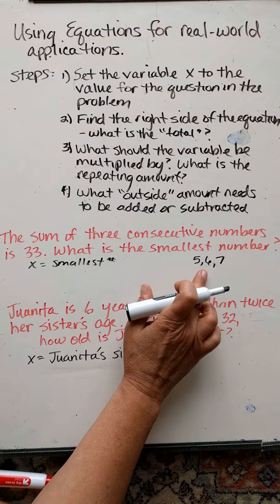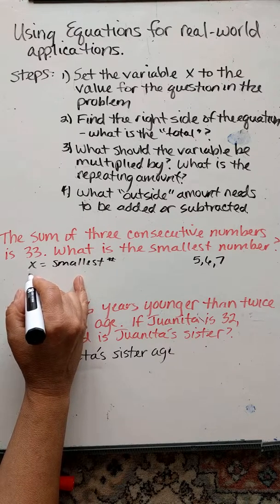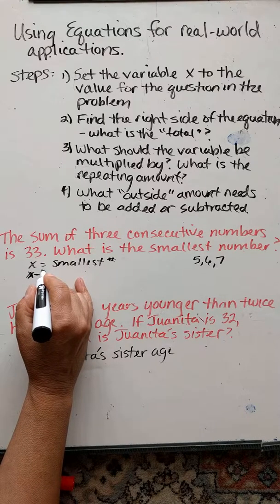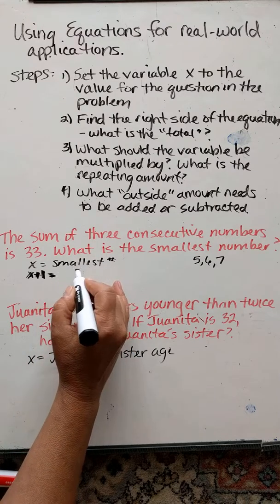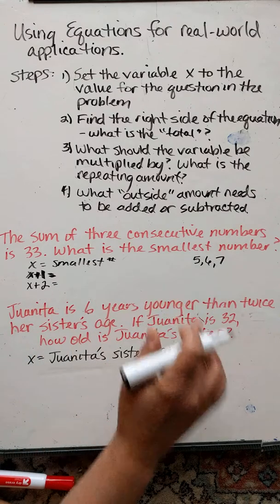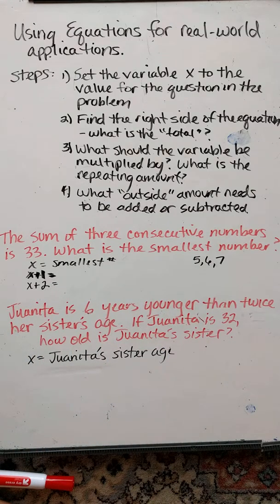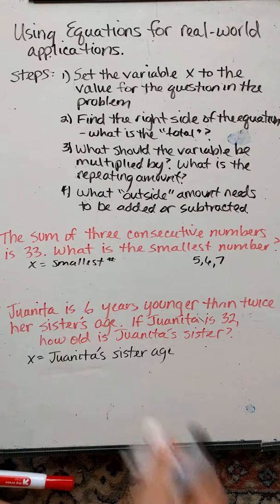Then the next larger number here is x plus 1. So if I say x is the smallest, x plus 1 is the next consecutive number, and x plus 2 is the one right after that. So I have three. This is how I represent the three consecutive numbers. Let me write these again.